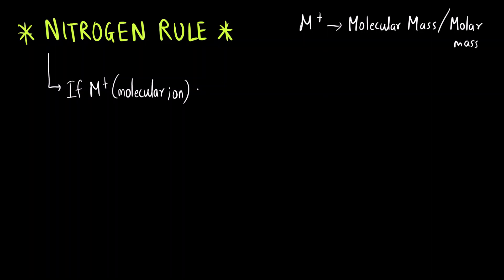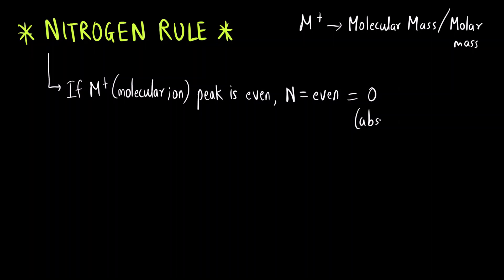So if the molecular ion peak value is even, then the number of nitrogen is also even. Even means zero — it is either absent, or there are an even number of nitrogens present: two, four, six and so on.